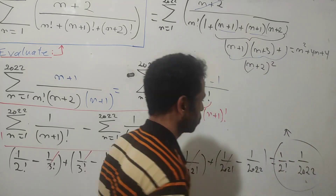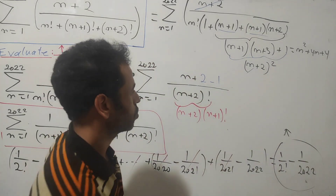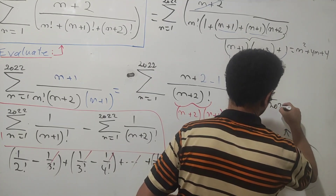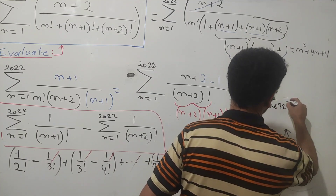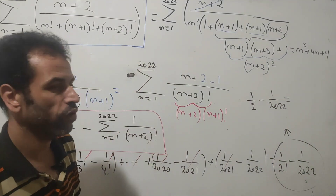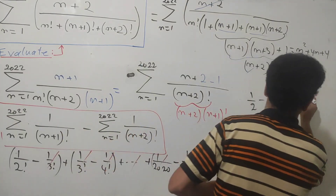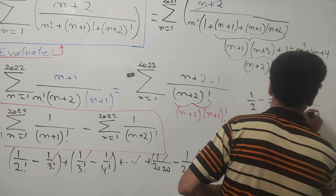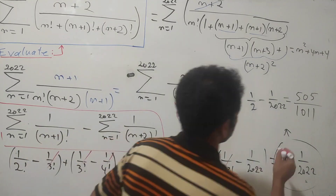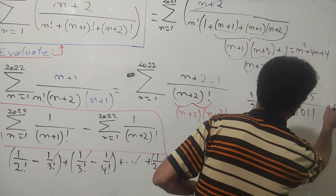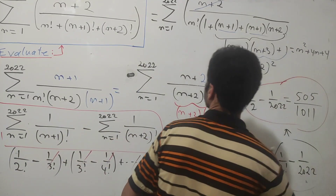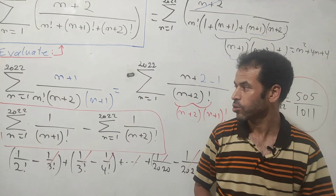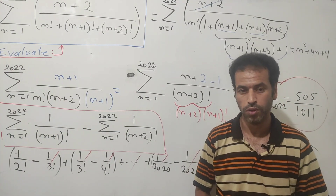Calculating the final answer: 1 over 2 factorial minus 1 over 2022 factorial. This gives us the final value of the sum. Thank you for watching and I'll see you in the next video.